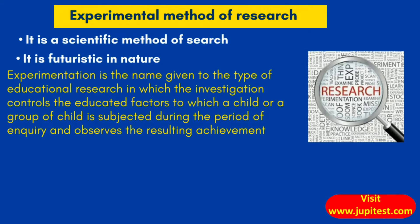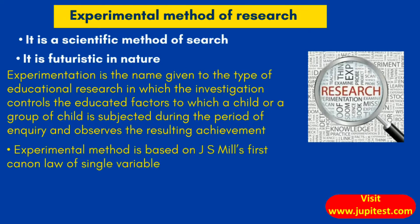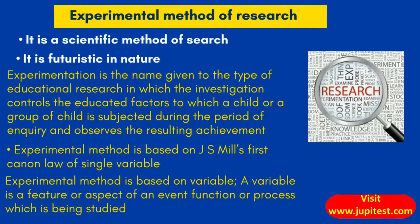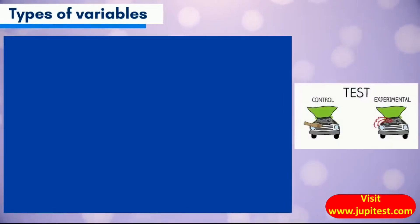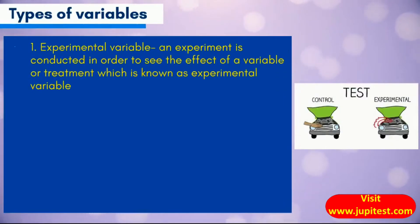The experimental method is based on J.S. Mill's first canon law of single variable. A variable is a feature or aspect of an event, function, or process which is being studied. There are several types of variables.